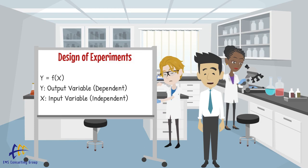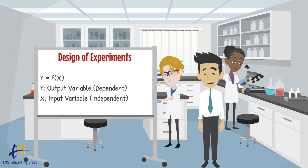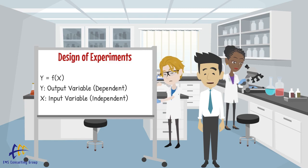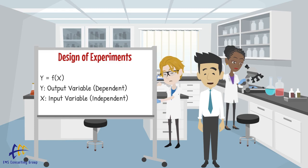These are the variables that affect the output and they are independent variables. For example, machine speed, temperature, or pressure might be x variables that affect our y variable. Design of experiments, or DOE, is a scientific method of planning and conducting an experiment that will yield the true cause and effect relationship between the x variables and the y variables of interest.